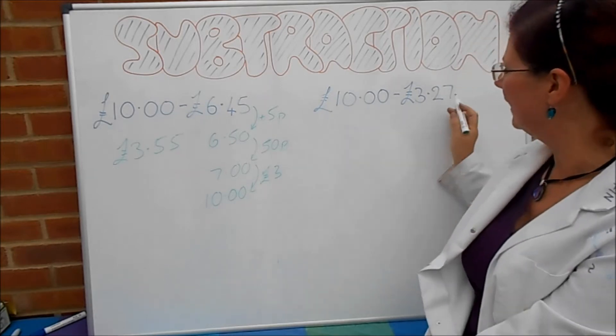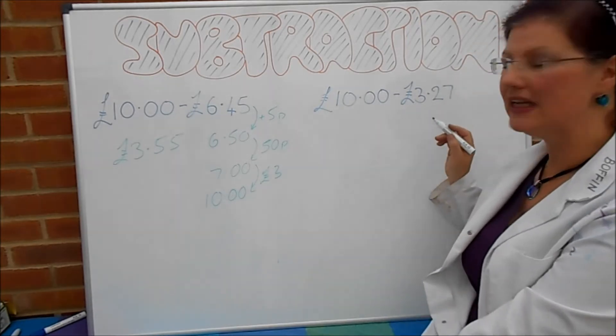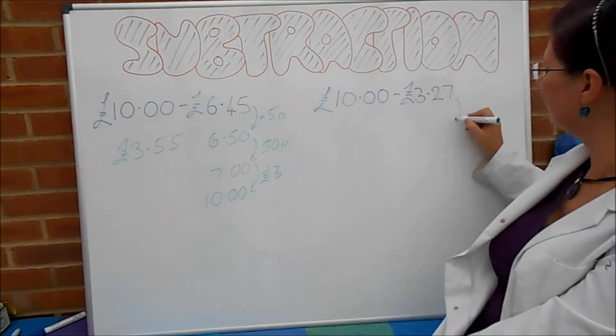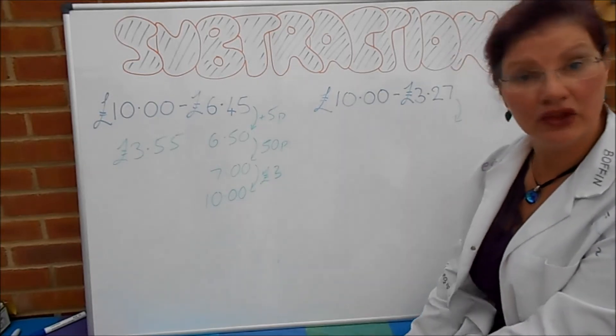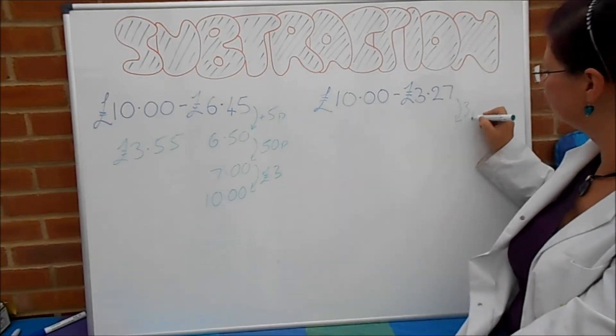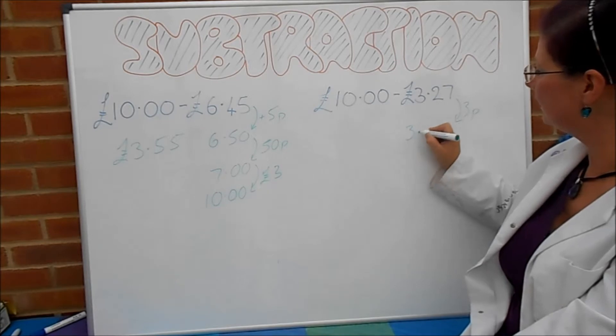Now the second one's a little bit trickier. We've got £3.27. So let's start off by adding 3p to bring us up to £3.30.